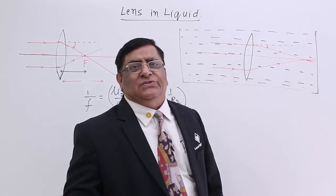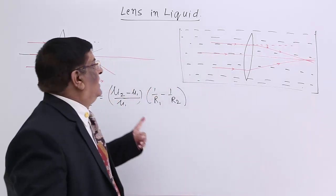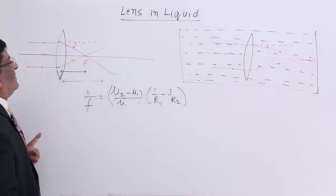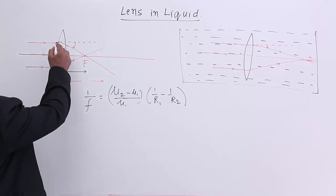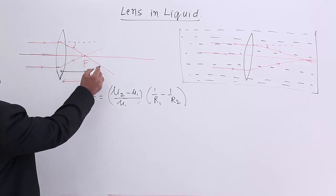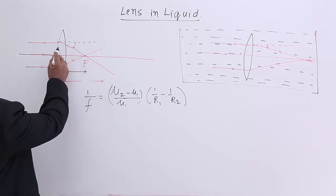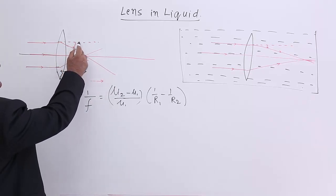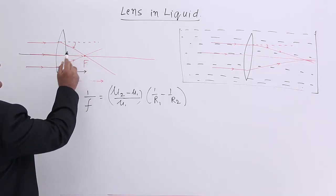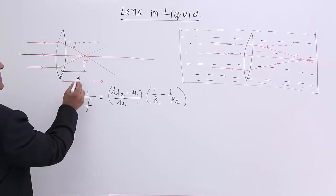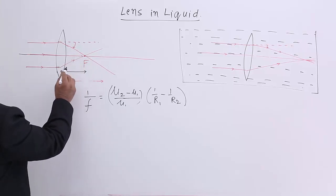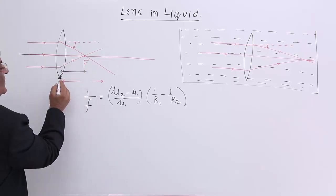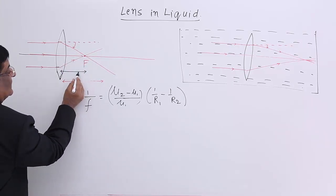We have a lens in the air. It has the power to bend the waves and the rays are bent with this angle — and this is the focus. This distance is the focal length.